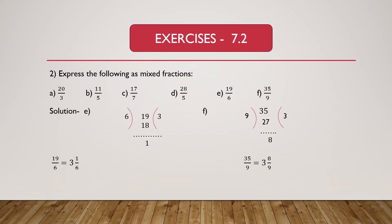Now we solve part E, which is given as 19 divided by 6. This fraction we have to express as a mixed fraction. Here 19 is the dividend and 6 is the divisor. We know 6 multiplied by 3 equals 18, and 19 minus 18 equals 1. We get 3 as the quotient and 1 as the remainder. So 19 divided by 6 equals 3 and 1/6.